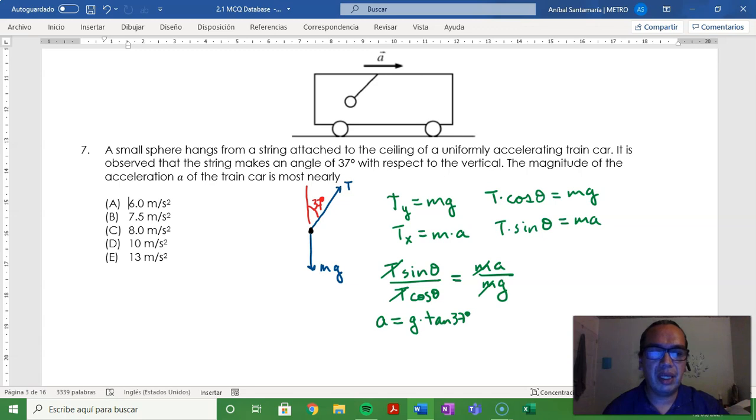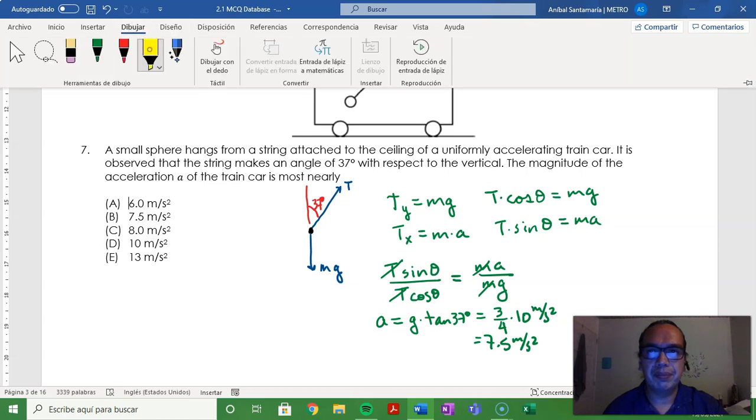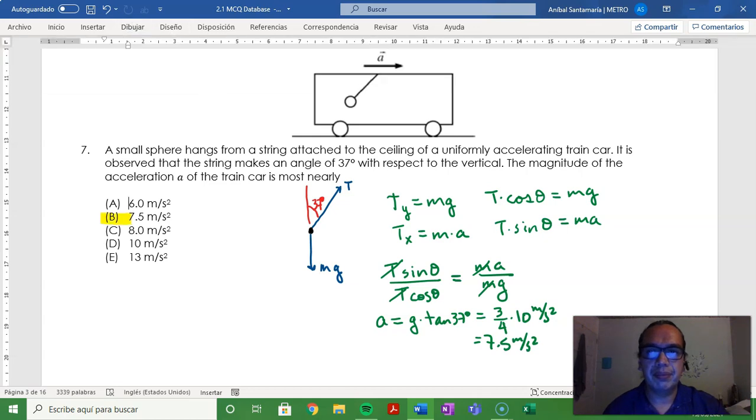This is approximately equal to 3 fourths. So this is approximately 3 fourths of 10 meters per second squared, or 7.5 meters per second squared, which is option B.